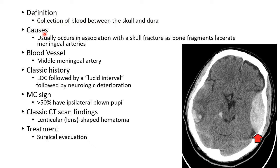Now let us see about the cause of epidural hematoma. It usually occurs in association with a skull fracture when bone fragments lacerate meningeal arteries. The most common blood vessel involved is the middle meningeal artery — that is, epidural hematomas occur when there is a skull fracture and bony fragments lacerate the middle meningeal artery.